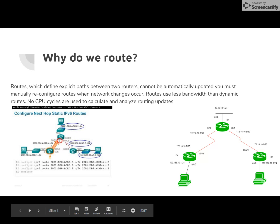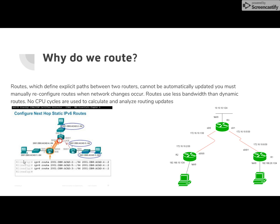This is why we route. Static routes define explicit paths between two routers and cannot automatically be updated, so you must manually reconfigure routes when network changes occur. Static routes use less bandwidth than dynamic routes, and no CPU cycles are used to calculate and analyze routing updates.